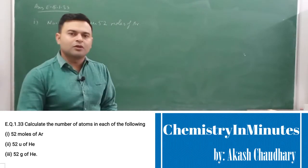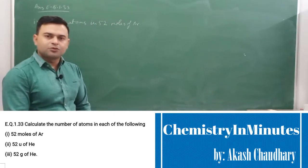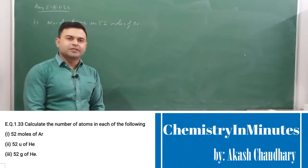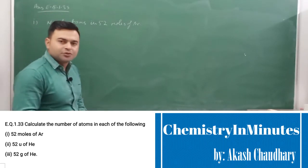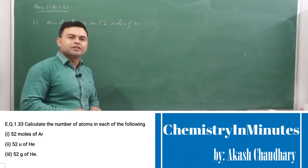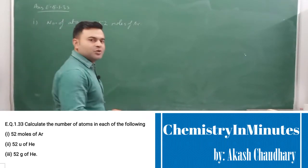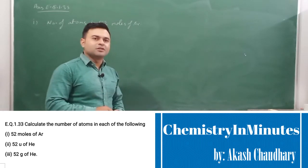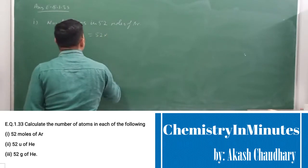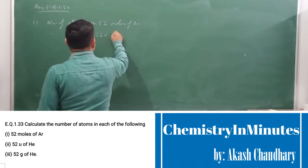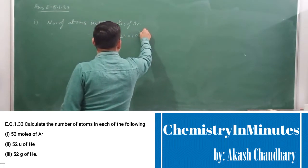1 mole of any substance contains 6.022 × 10²³ atoms. Or, 1 mole of an element contains 6.022 × 10²³ atoms. Now, here we have 52 moles, so we simply multiply the number of moles by Avogadro's number to get the answer. This will be equal to 52 × 6.022 × 10²³.